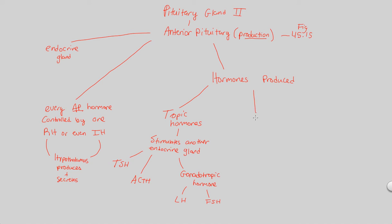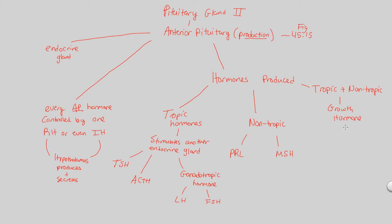In contrast, non-tropic hormones aren't as complex — they don't stimulate another endocrine gland; they simply carry out a necessary function or message. Non-tropic hormones include PRL, which stands for prolactin, and also MSH, which stands for melanocyte-stimulating hormone. In addition, some hormones have a combinatorial effect — both tropic and non-tropic — and the classic example is growth hormone, or GH, which is both tropic and non-tropic depending on its function and where it's released.